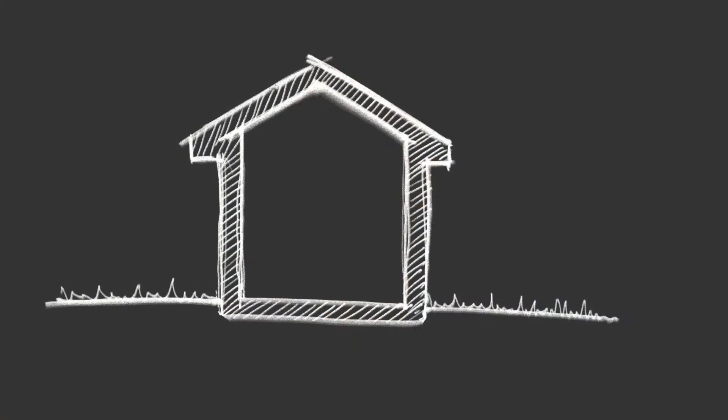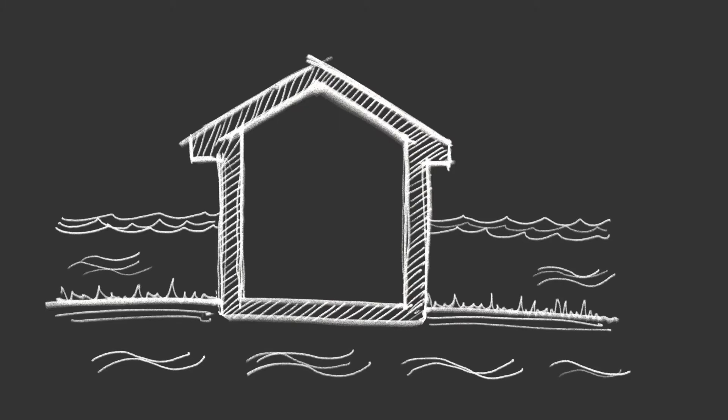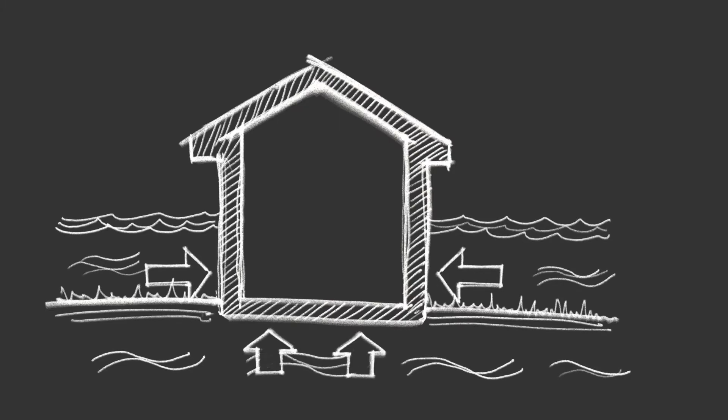Once you've established a watertight barrier, your floor slab and walls need to be designed to resist water pressing in from the sides and from underneath. This needs to be taken into account early on in the design phase.